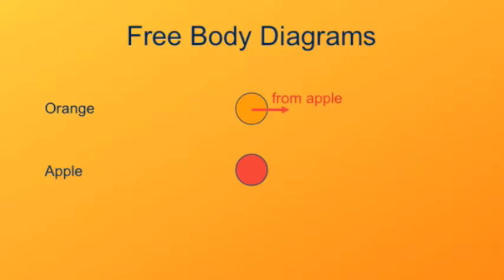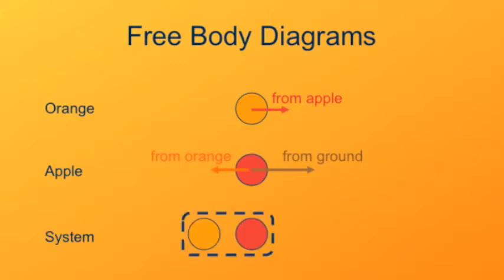If we look at the apple, the apple receives a backward force from the orange and a forward force from the ground. If we're looking at the apple as our system, its momentum is changing — it's accelerating to the right. If we look at the system that includes both the apple and the orange, the force of the apple pulling on the orange to the right and the orange pulling on the apple to the left cancel out within the system. It might cause the apple and orange to move around within the system, but it doesn't change the momentum of the system itself. The force of the ground pushing on the apple to the right, however, is an external force and does change the momentum of the apple-orange system.